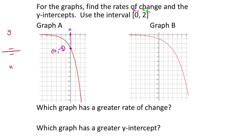Starting with x = 0 for graph A—that's right on the y-axis. I follow this line down to find where the red line crosses x = 0. That's the y-intercept, showing the value (0, -3). The x-value is 0, going on the bottom of the slope formula; y = negative 3 goes on top.